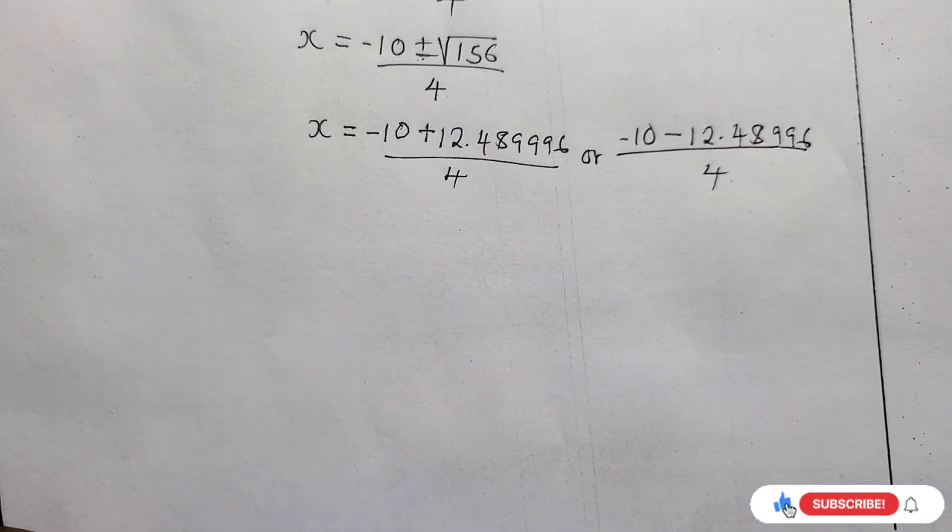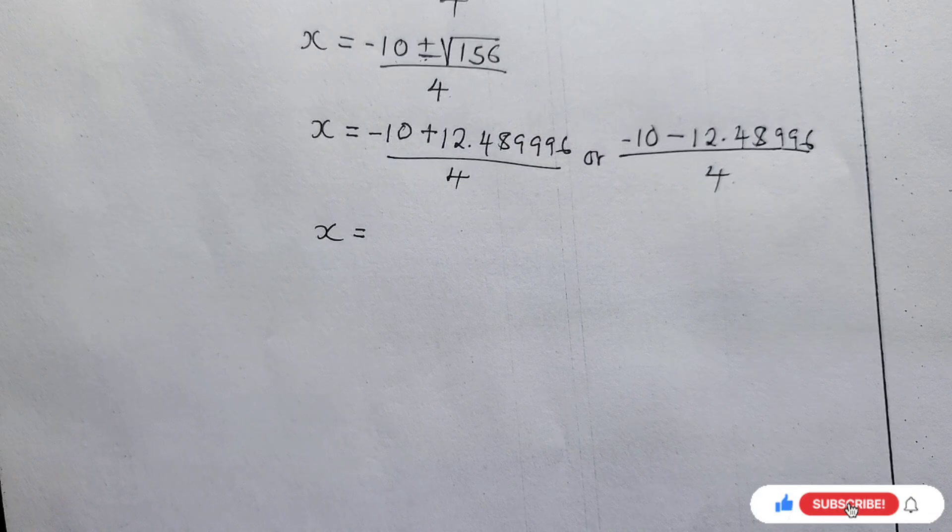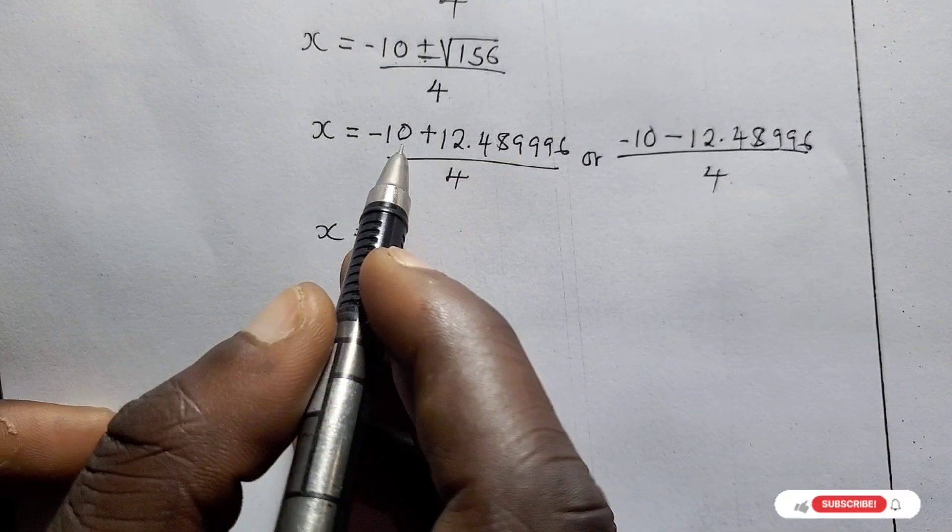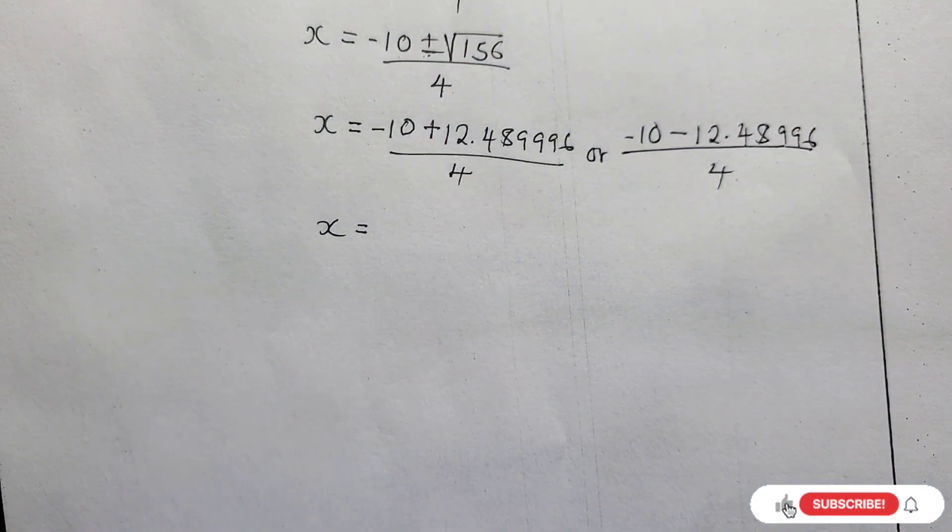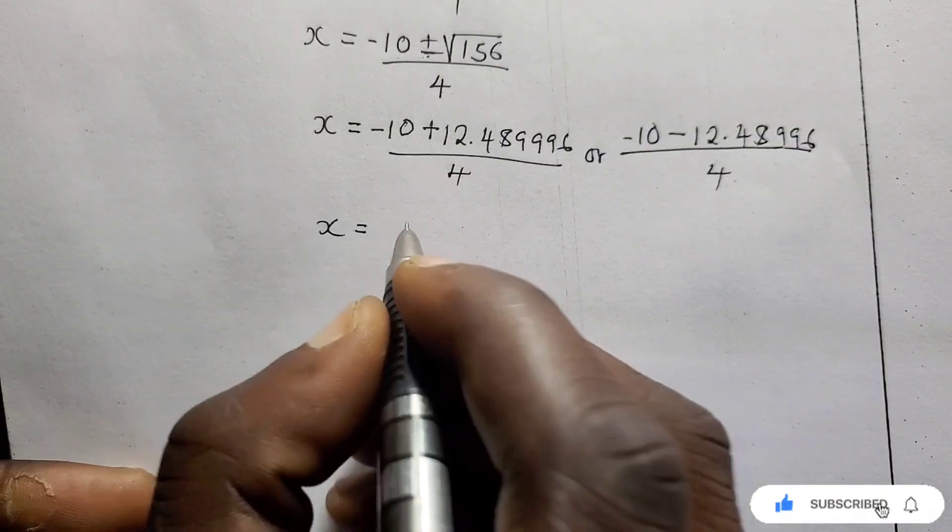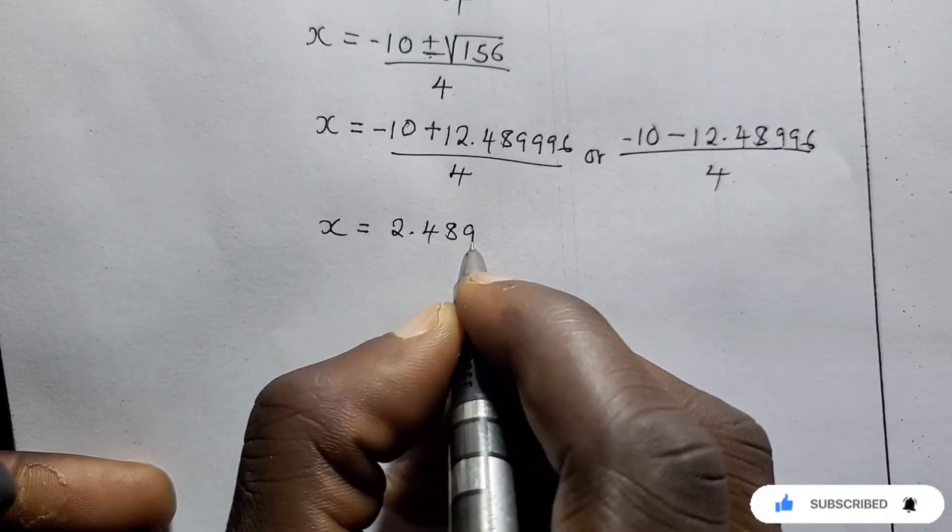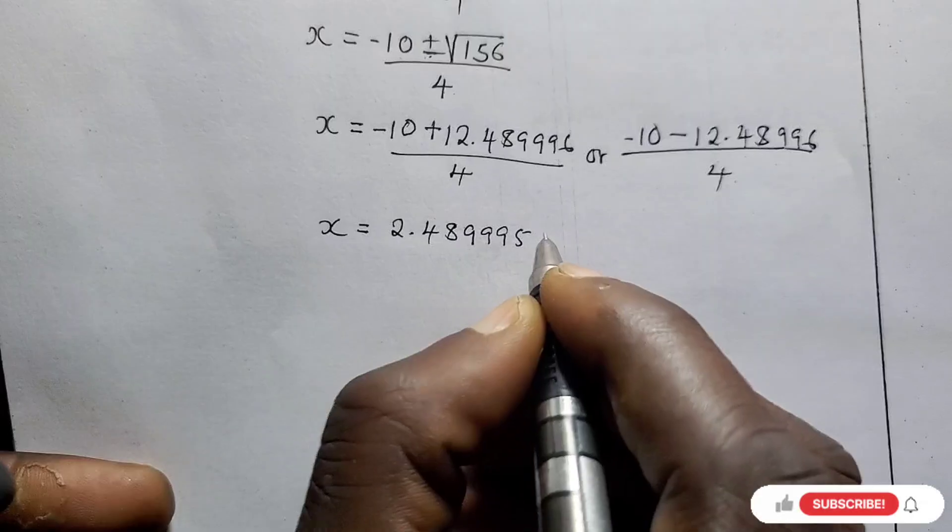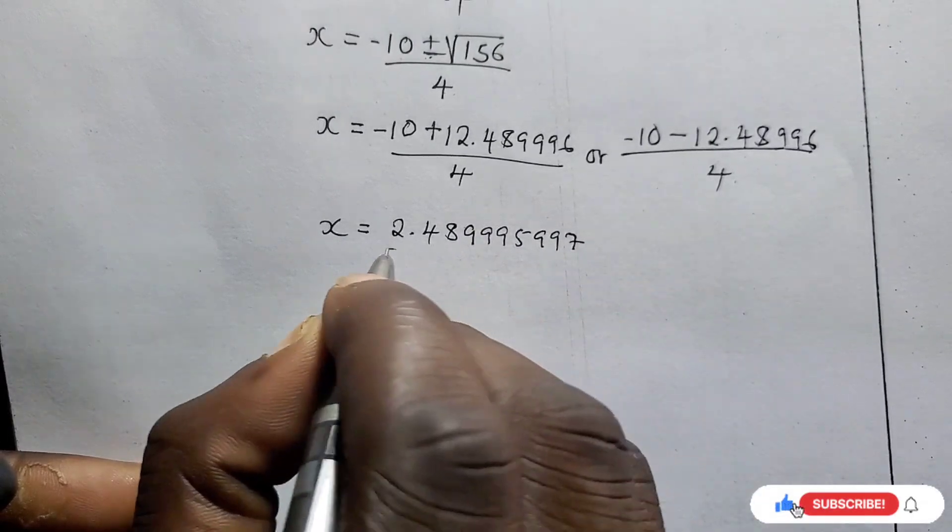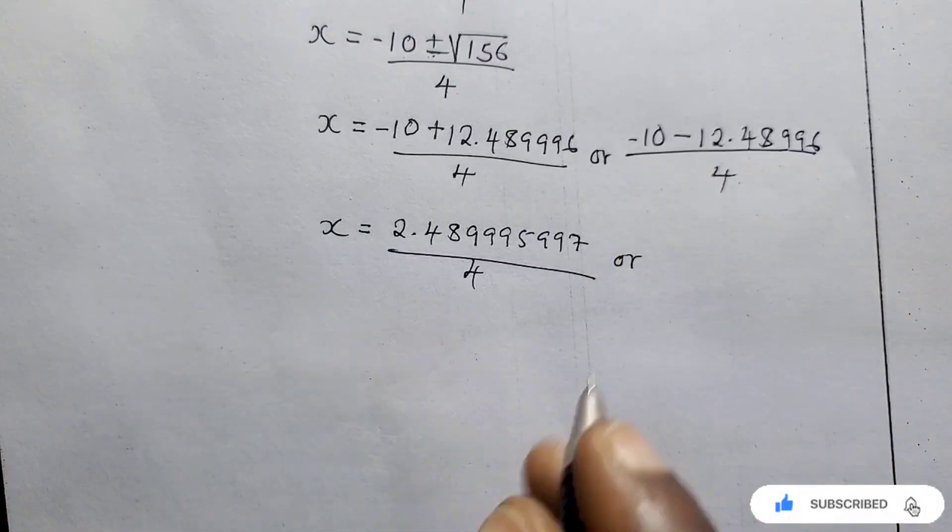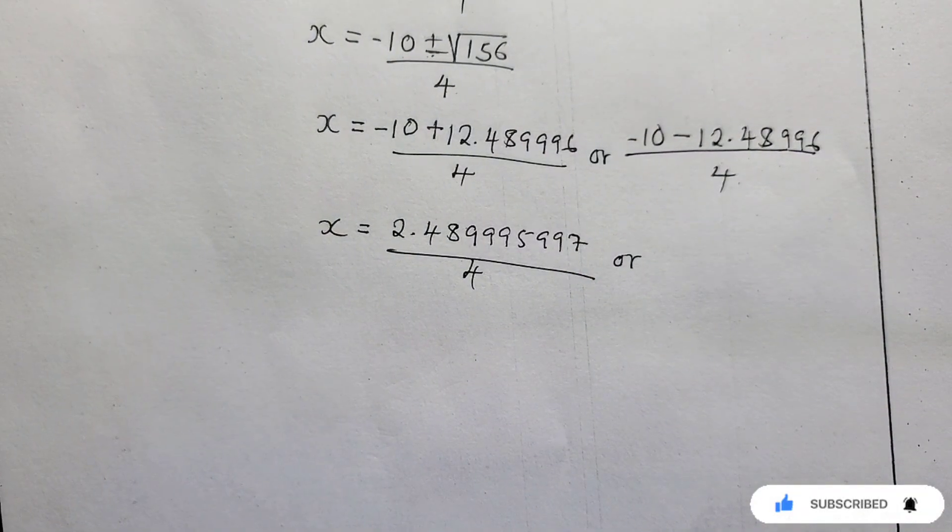We proceed. It's 5 marks, so make sure you solve. You're solving this within time. So what we're going to do is, let's deal with this first. Negative 10 plus this. So it's giving me 2.4899959997 over 4. Or this side, let's deal with this side. Let's calculate on top there.